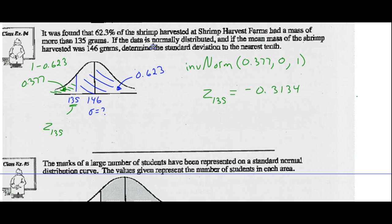So that means the data value of 135 corresponds to a z-score of negative 0.3134. And now let's use our z-score formula, which says our data value minus our mean divided by our standard deviation will equal our z-score. And if I use that formula, I can find my standard deviation. So a z-score of negative 0.3134 would equal my data value 135 minus my mean 146, divided by my standard deviation. So I can multiply both sides by the standard deviation. And 135 minus 146 is negative 11. And I divide both sides by negative 0.3134. And we find out what the standard deviation equals. So you do that with your calculators. Negative 11 divided by negative 0.3134, and we get a standard deviation of 35.1.